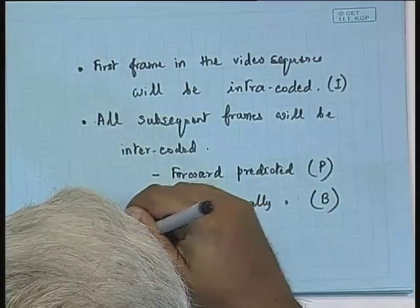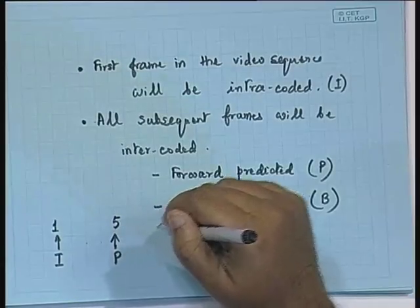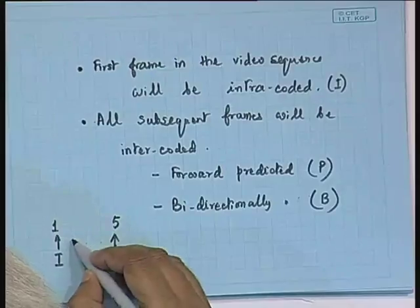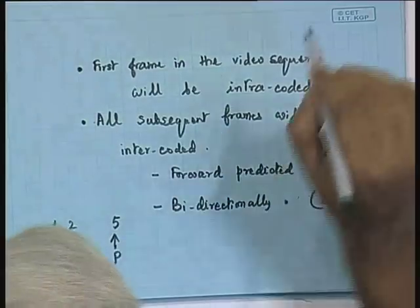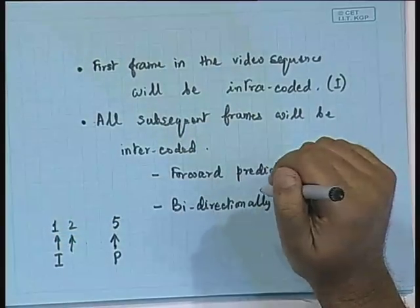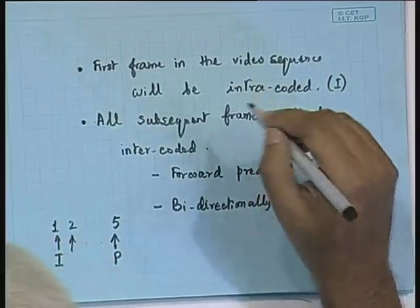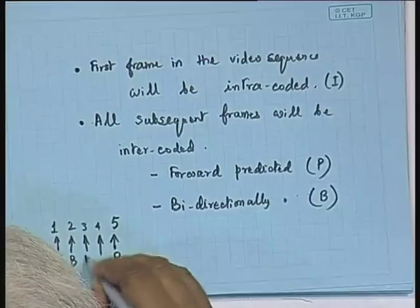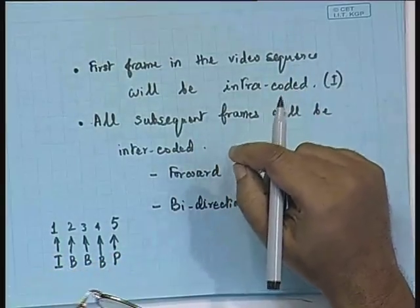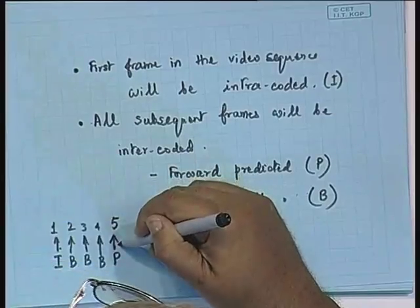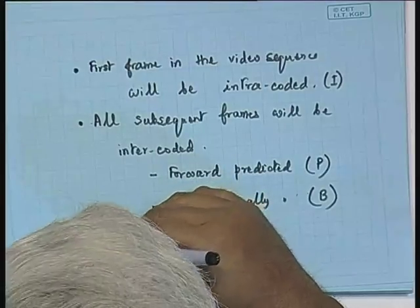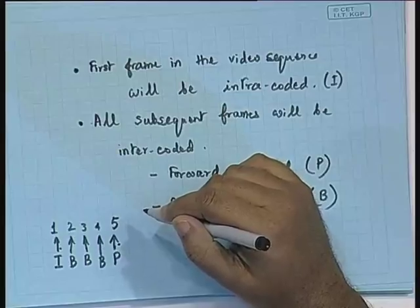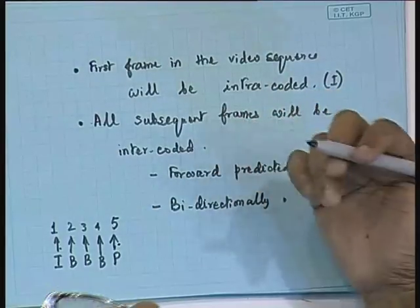After predicting frame 5, we can use both frame 1 and frame 5 as references. To encode frame 2, we can use frame 1 as reference and frame 5 as reference, allowing bi-directional prediction. Similarly for frames 3 and 4 — they can all be bi-directionally predicted. So we have one I frame, one P frame, and three B frames sandwiched between them. Three is just an example; it could be two or four B frames.